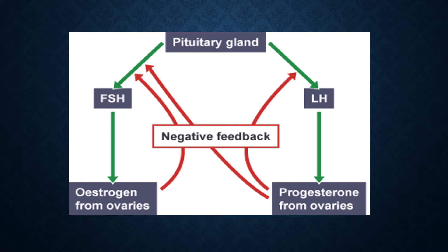Like the feedback mechanism in the menstrual cycle, the FSH released in the pituitary gland produces the hormone estrogen coming from the ovaries — that is the green arrow. High levels of estrogen then prevent the further production of FSH. The ovaries send a negative feedback to the pituitary gland to inhibit the further production of FSH.